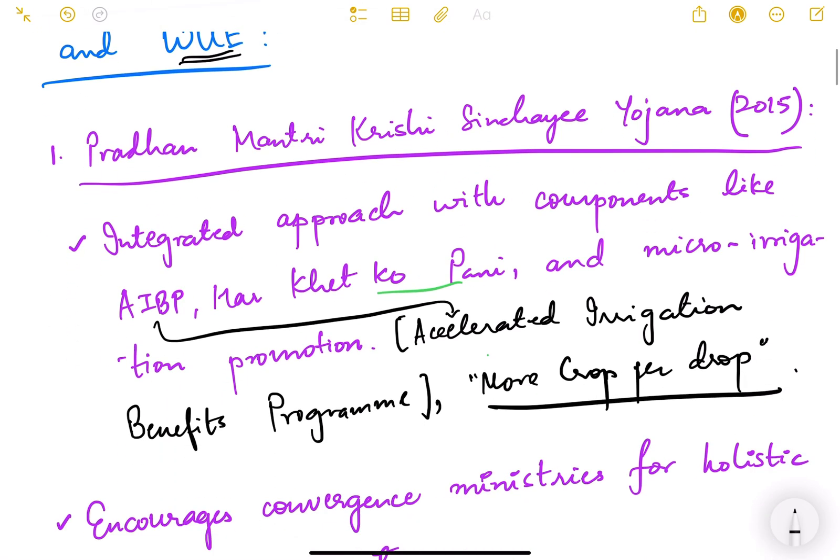The first scheme that we are going to talk about is Pradhan Mantri Krishi Sinchai Yojana. This scheme was launched in 2015. It is basically an integrated approach with components like AIBP, Har Khet Ko Paani and Micro Irrigation Promotion. So there are three main components here.